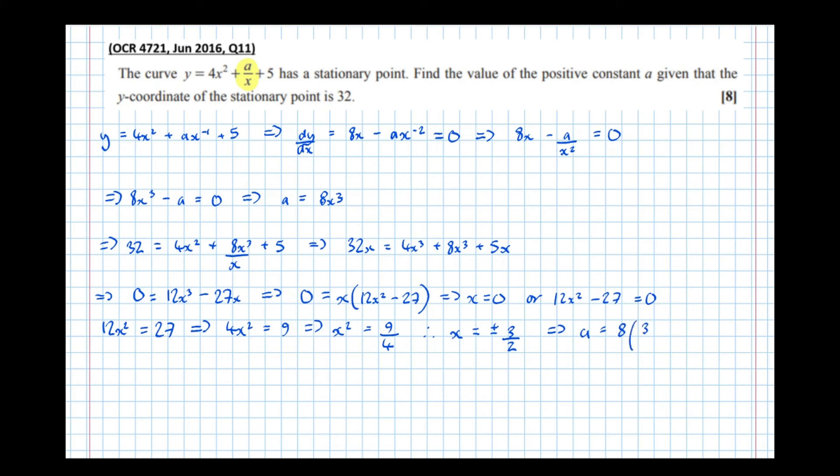So (3/2)³, which is equal to 8 × 27/8. Therefore a = 27.